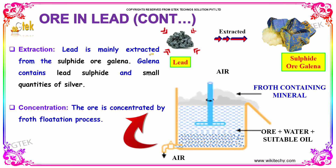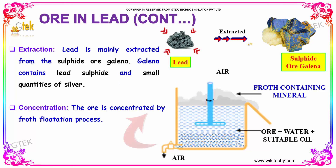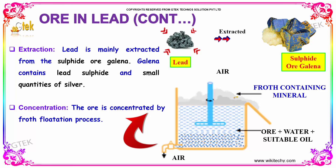Lead is mainly extracted from the sulfide ore, galena. Galena contains lead sulfide and small quantities of silver. The first process is concentration. The ore is concentrated by a flotation process — the ore is mixed with water and a suitable oil, and air is passed through it. The flotation minerals are collected by passing air into the mixture.